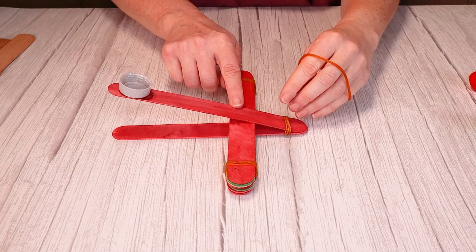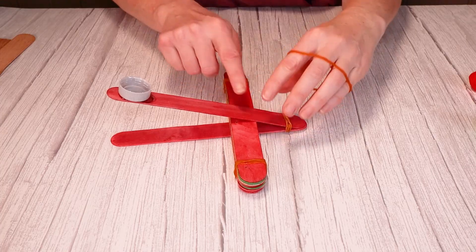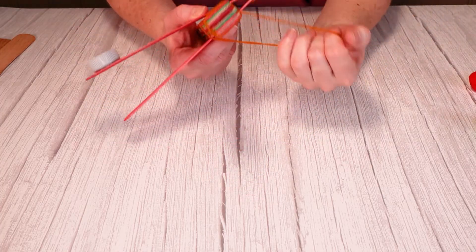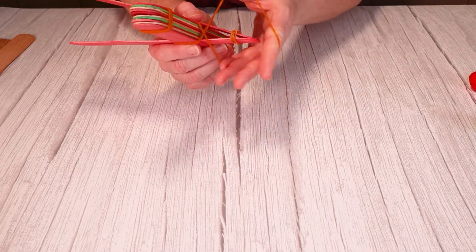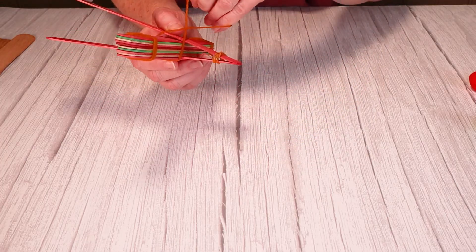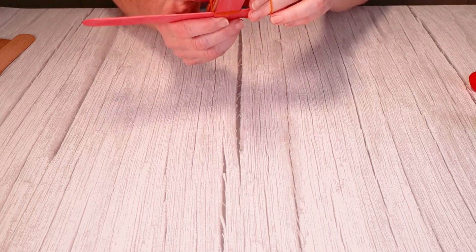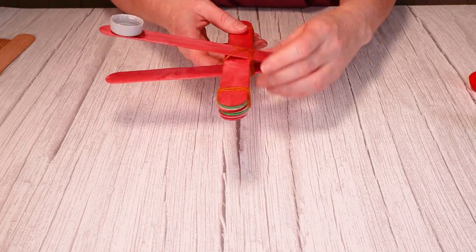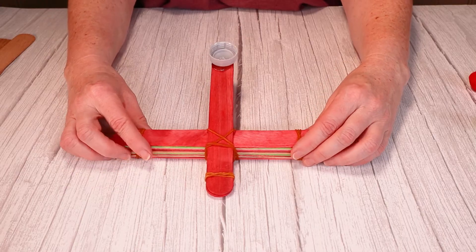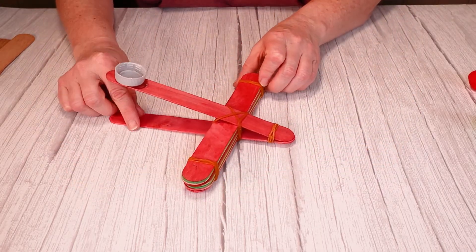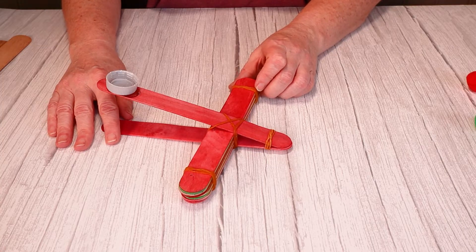So now we're just going to add an elastic that's going to secure our lever to our fulcrum. So I'm just going to go take it, go across like that. And just attach them like that. And now our catapult is ready to go.